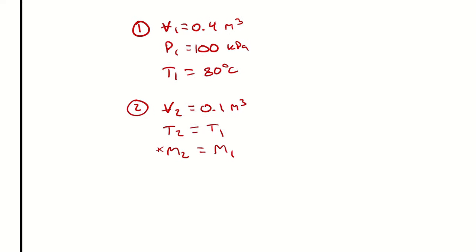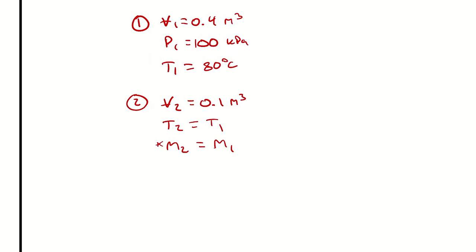Now we pose the question: do we have both state points fixed? That is, do we have two independent intensive properties for both state points? P1 and T1 are our independent intensive properties at state point 1, from which we could theoretically come up with anything else — since this is air, that would be via the ideal gas law. For state point 2, temperature is one independent intensive property, and the specific volume is the other property that fixes state point 2.